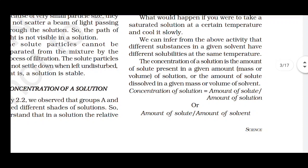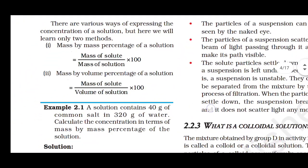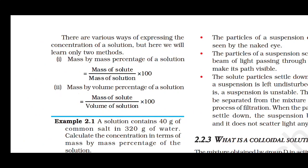To find the concentration of a solution, the formula is: concentration = amount of solute / amount of solution, or amount of solute / amount of solvent. Note that the total amount of solution equals solvent plus solute combined. There are various methods of expressing concentration: mass by mass percentage = (mass of solute / mass of solution) × 100; mass by volume = (mass of solute / volume of solution) × 100.